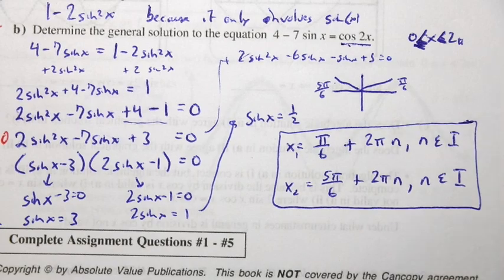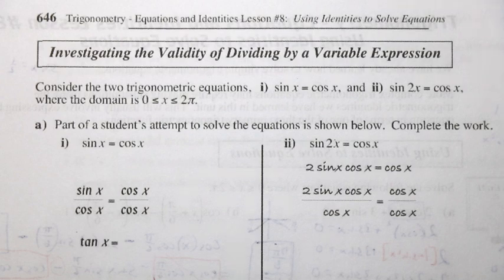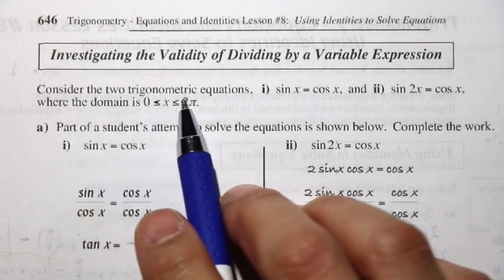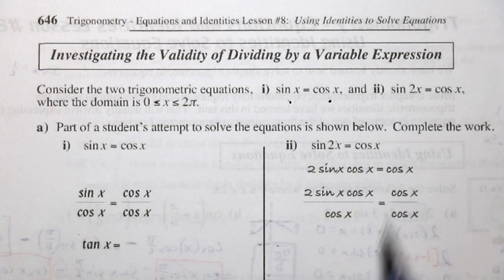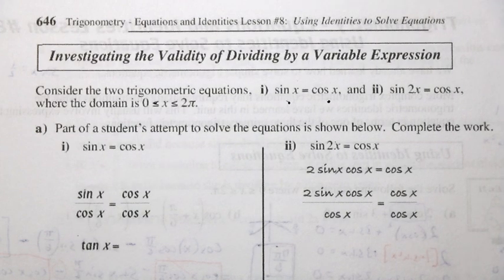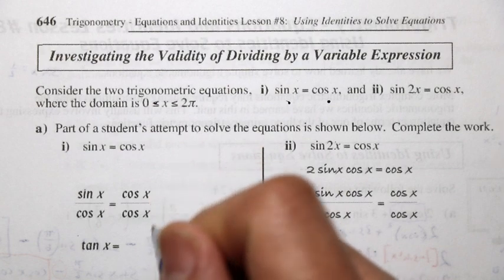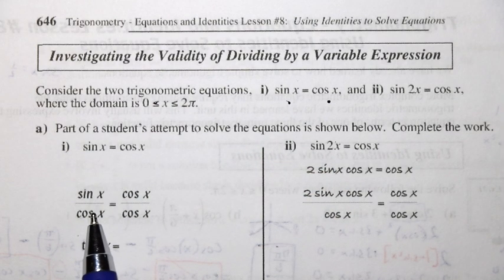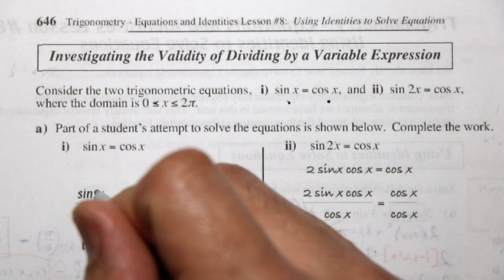Let's do an investigation on the validity of dividing by a variable expression. Consider two trig equations: sin x = cos x, and sin 2x = cos x, with domain [0, 2π]. We'll look at a student's attempt to solve both by dividing by cos x.